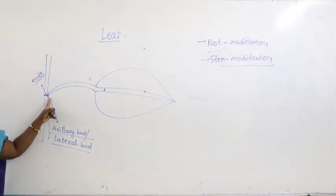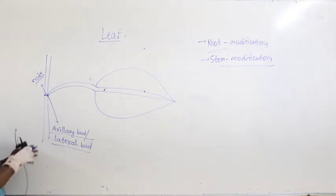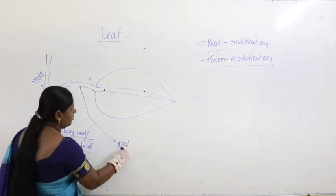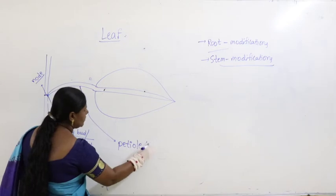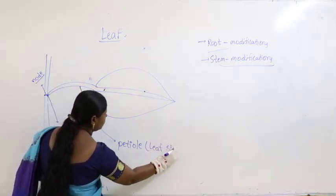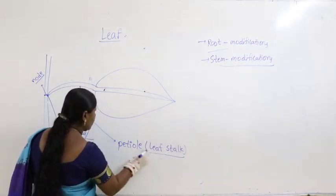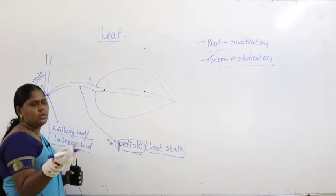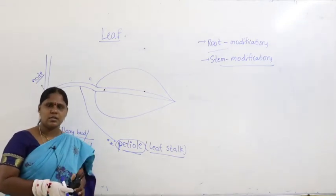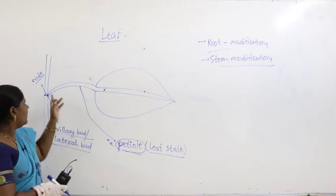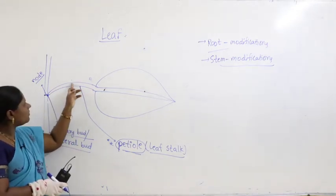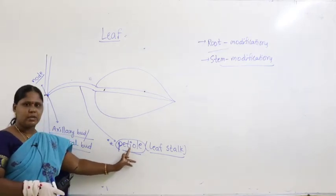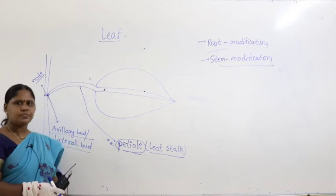At the early stage of leaf formation, the leaf has a stalk. The stalk of the leaf is called the petiole. In your garden or surroundings, take any leaf and observe: it has a stalk, and that stalk is called the petiole — simply put, it is the leaf stalk.